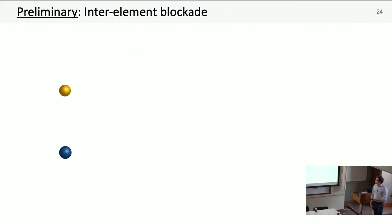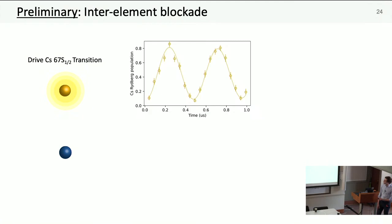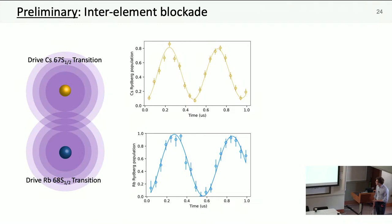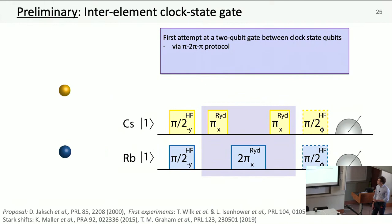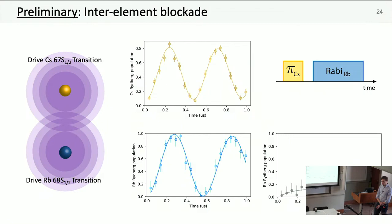We had to try to make them interact. Here you can see we can drive cesium oscillations, find a pi time, then drive rubidium oscillations. Putting these two things together, we can try and blockade. When we do that, we really suppress the rubidium oscillation. We see really clear evidence that we have good blockade. At this spacing, four microns, blockade should be about 40 megahertz compared to our two megahertz, so that should be pretty good.